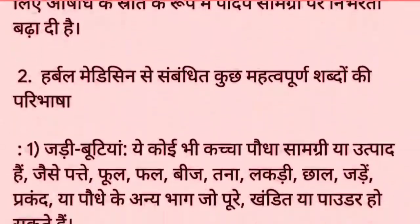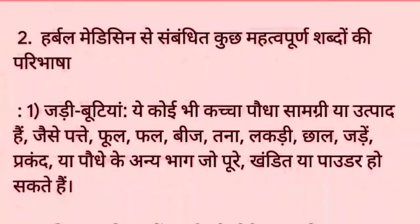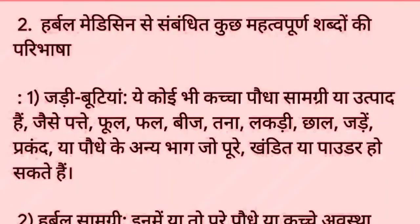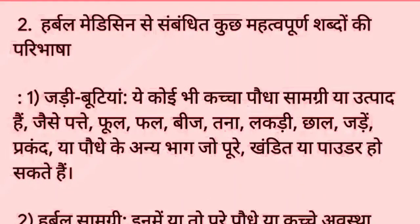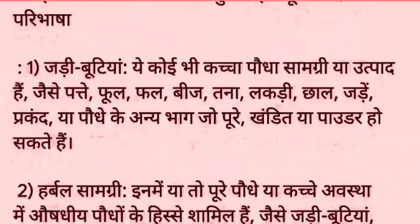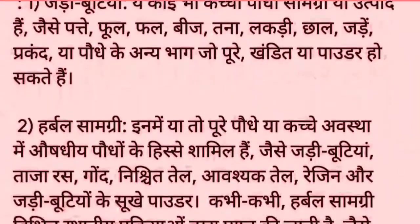हर्बल मेडिसन से संबंधित कुछ महत्वपूर्ण शब्दों की परिभाषा। 1. जड़ी बूटियां: ये कोई भी कच्चा पौधा सामग्री या उत्पाद हैं, जैसे पत्ते, फूल, फल, बीज, तना, लकड़ी, छाल, जड़ें, प्रकंद, या पौधे के अन्य भाग जो पूरे, खंडित या पाउडर हो सकते हैं।